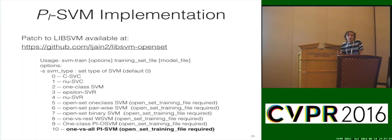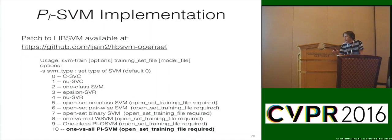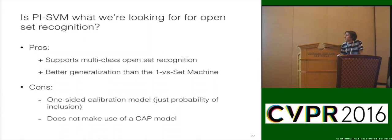For implementation: we have a patch to LibSVM which implements this. It implements the one-versus-set machine and also the WSVM, which I'm going to talk about next — it's just another option you choose as the decision machine you want to train. You don't have to do anything special in terms of preparing features; just use a LibSVM-formatted feature file. There's a link on our companion website to this tutorial where you can download it right now. Terry will talk about results for all these algorithms in the next section.